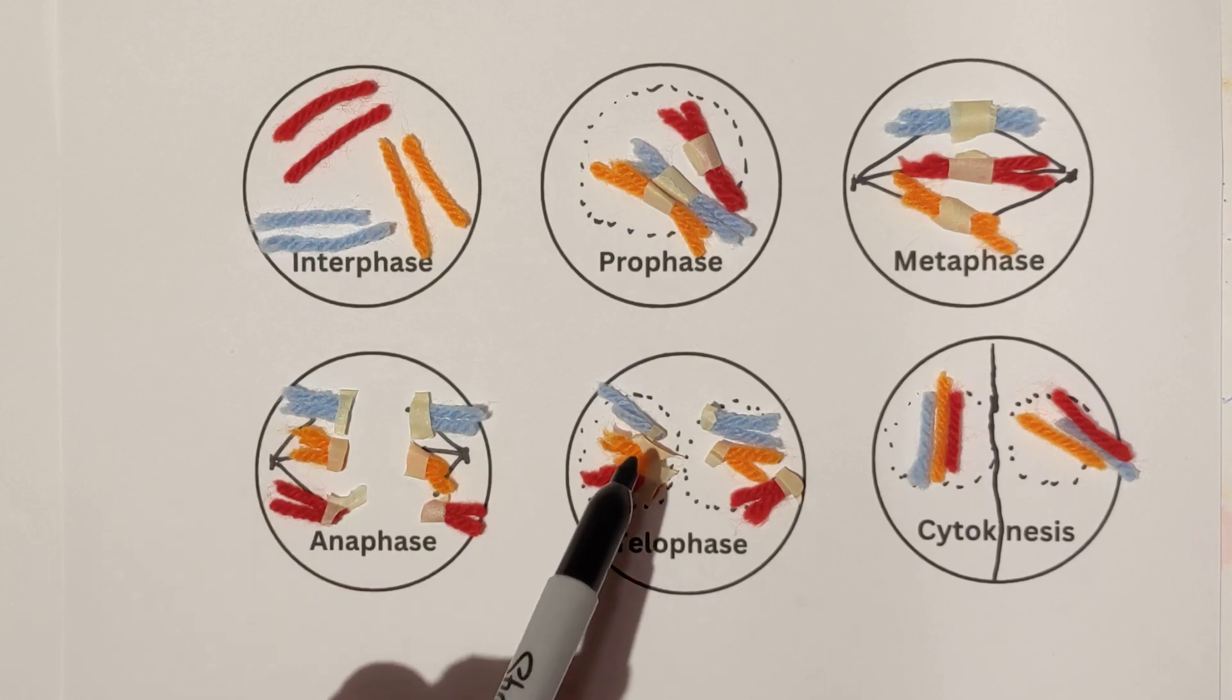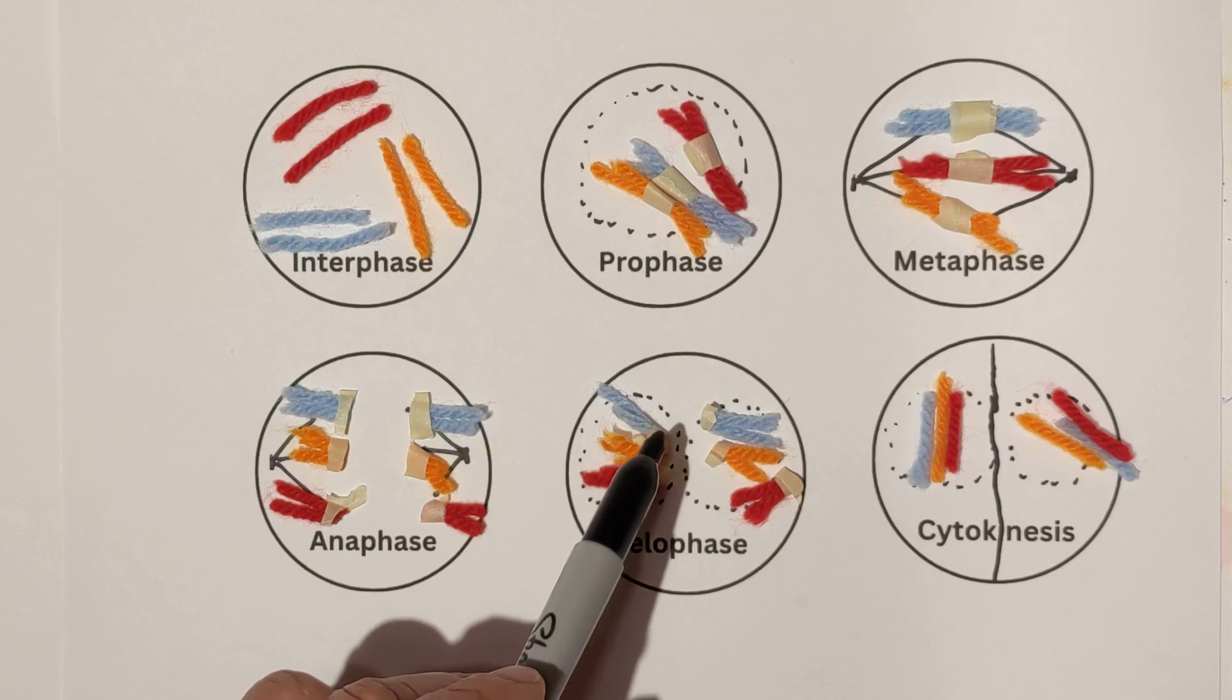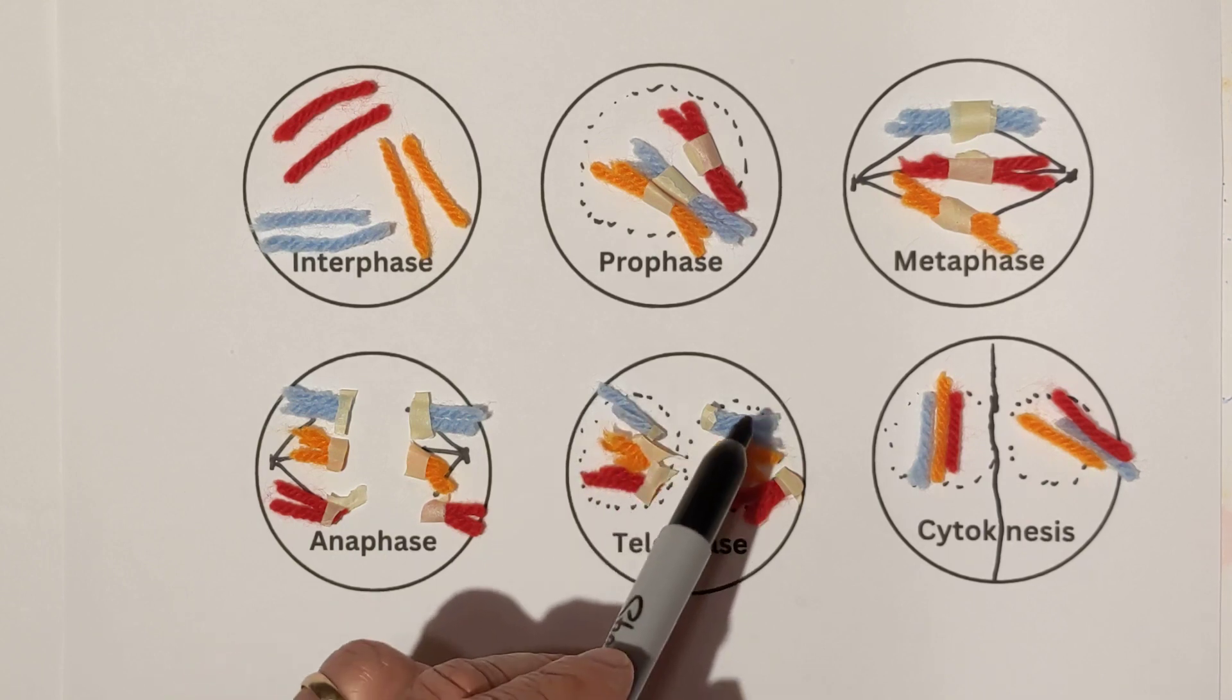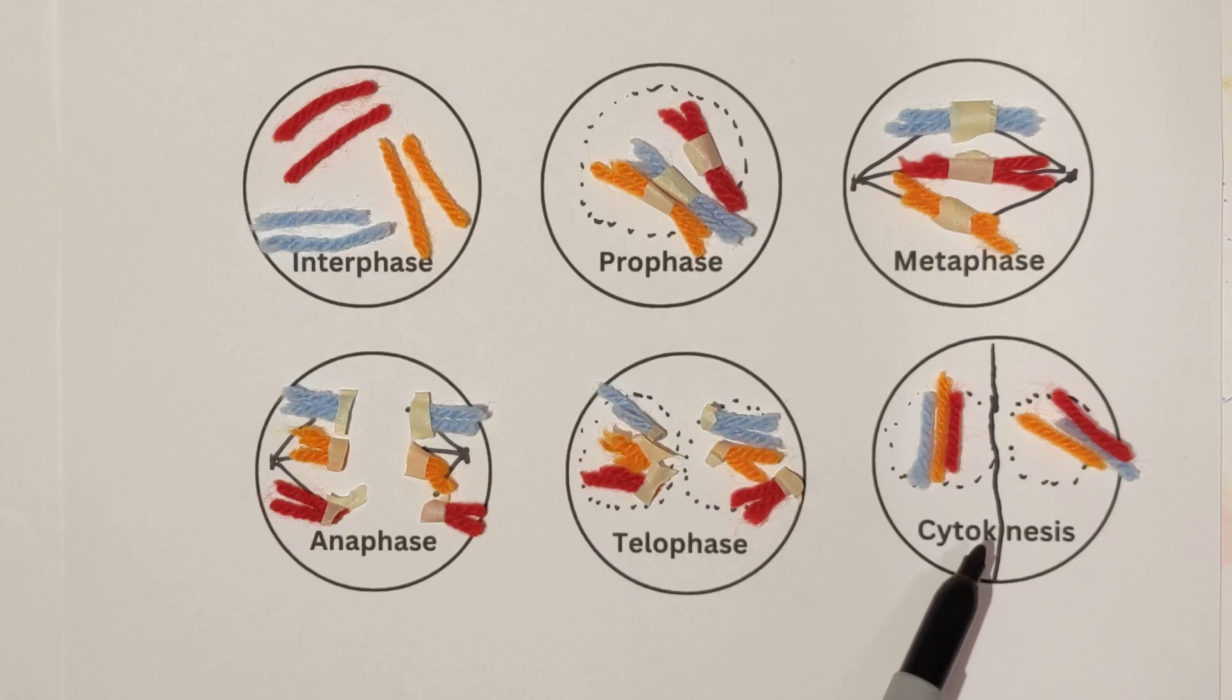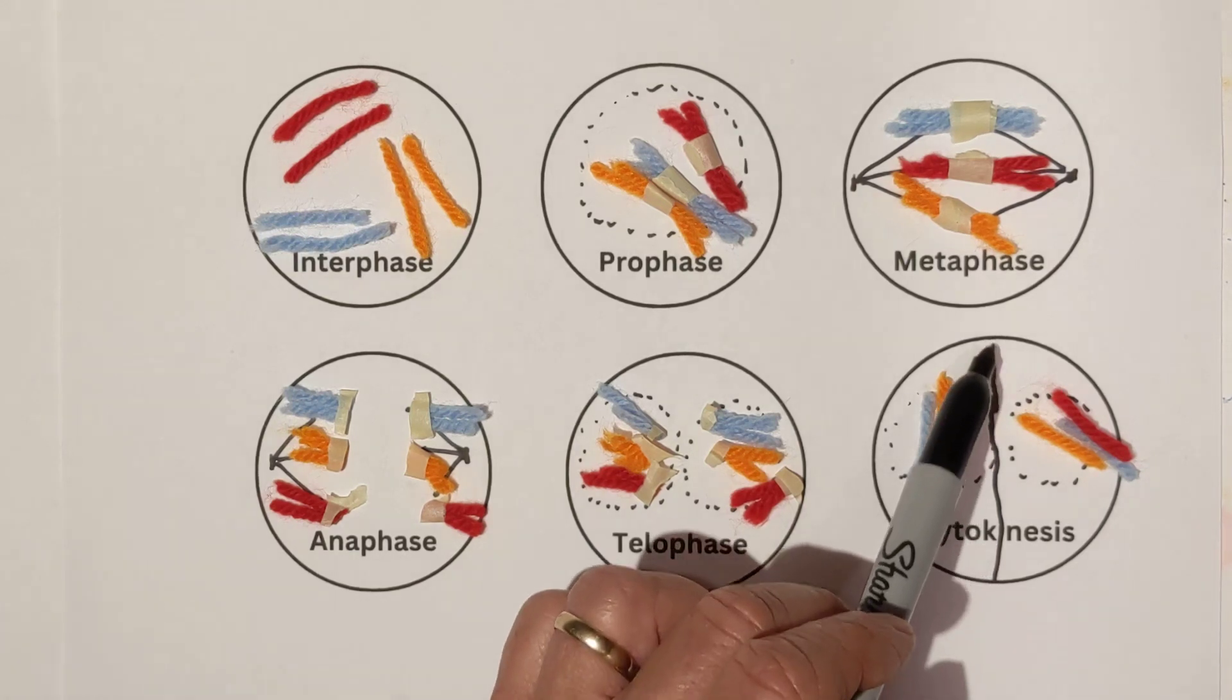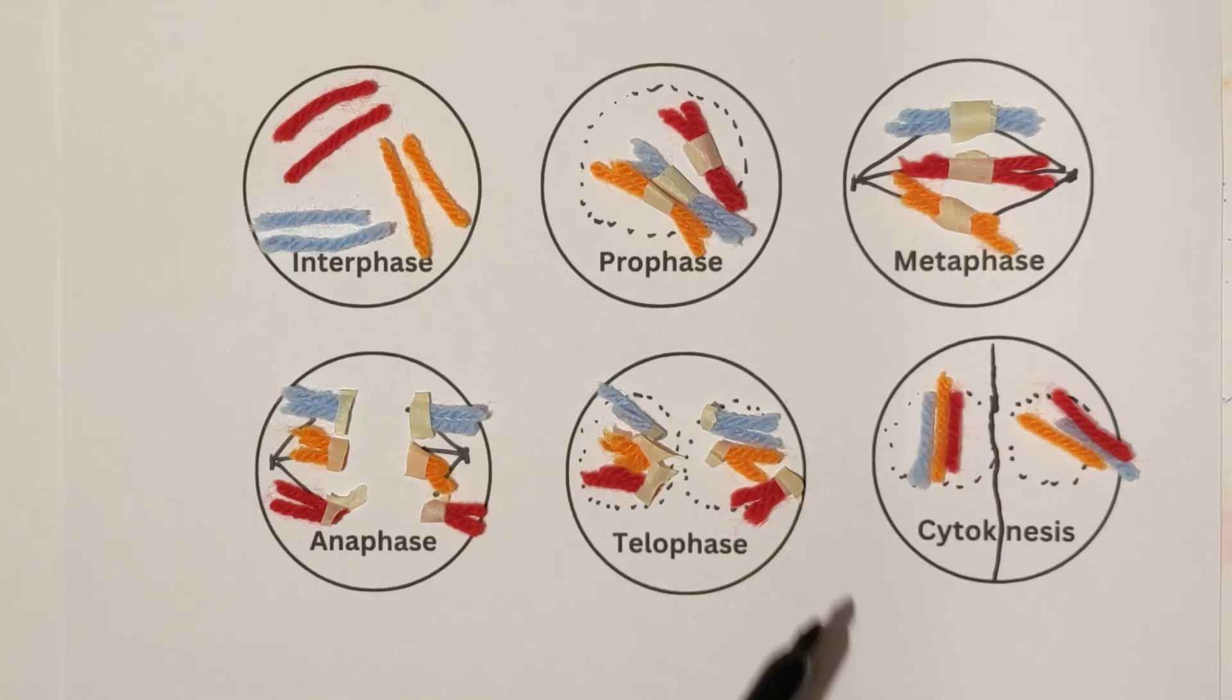Anaphase, the spindle fibers pull the chromosomes apart and in different directions. Telophase, the nuclear membrane begins to reform. And then in cytokinesis, you have two daughter cells that are created. And you have a cell plate that divides these two.